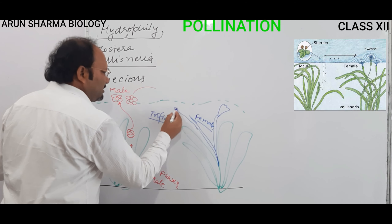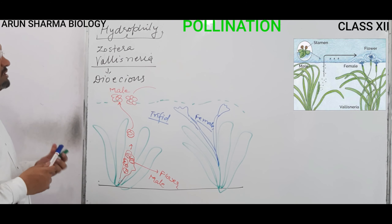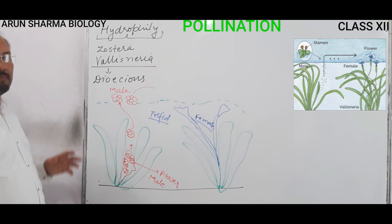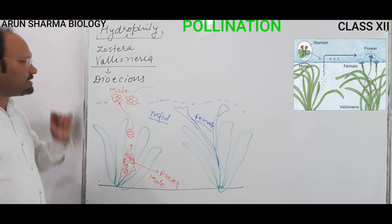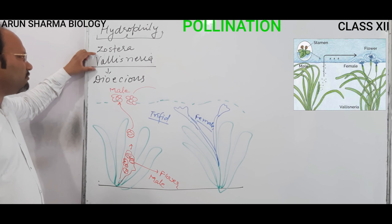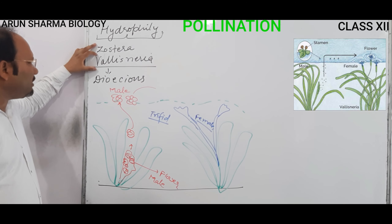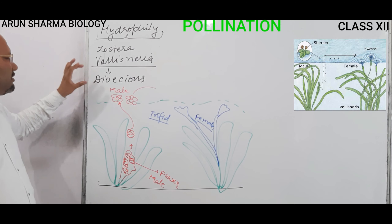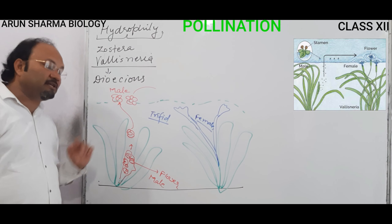Then these male flowers will reach and contact the female stigma, and pollination proceeds. After pollination, the process of sexual reproduction is completed. This was all about hydrophilous flowers — their characteristics and the example of Vallisneria, which is a dioecious plant with a beautiful pollination mechanism.